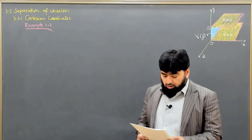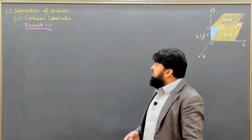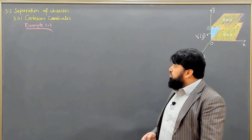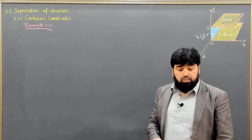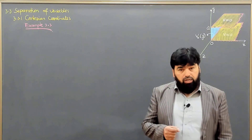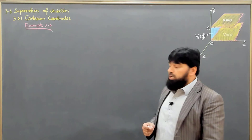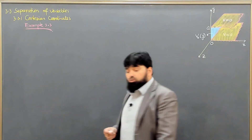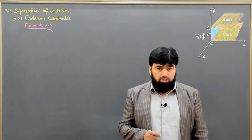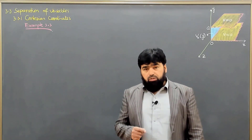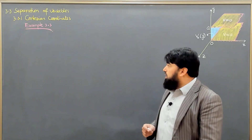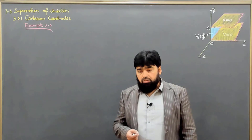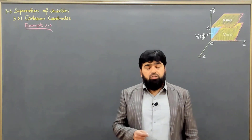After the method of images, we will start with the separation of variables. Inside this main topic, we will first consider Cartesian coordinates and then move to spherical polar coordinates. In Cartesian coordinates, we will solve three examples: the first two are two-dimensional setups and the third is a three-dimensional setup.